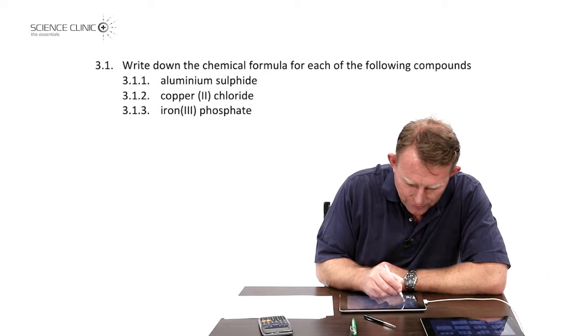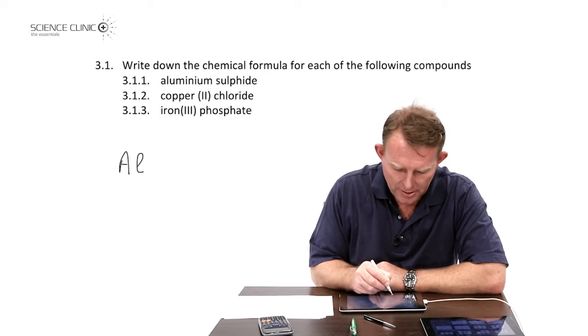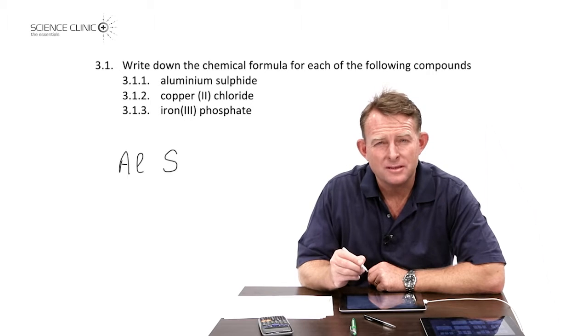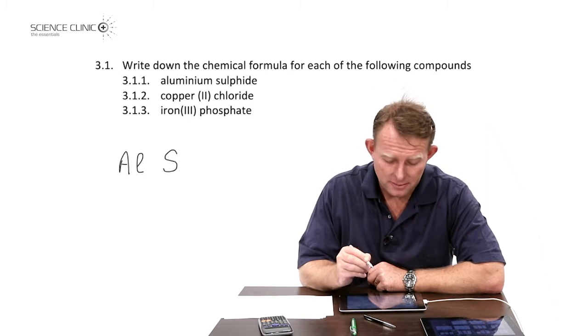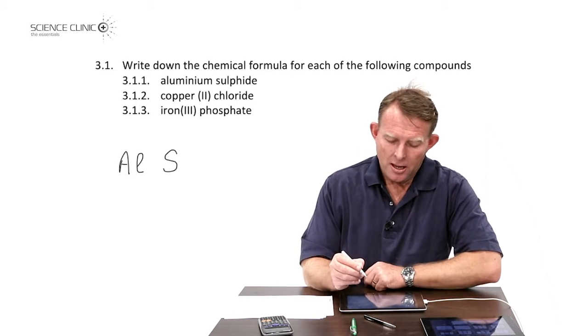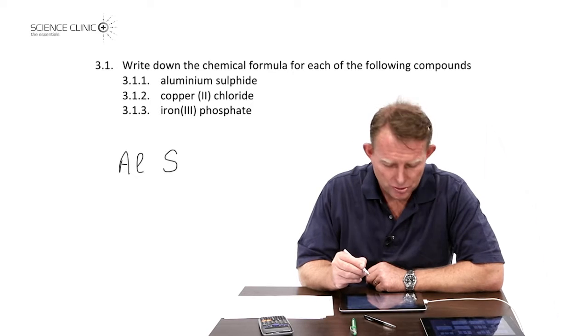We start off writing the formula for aluminum Al and then the formula for sulfur. And that's a key thing that we know this is sulfur, not any sulfate or sulfite. This is a sulfide, and that's the first step: write down those two symbols next to one another.